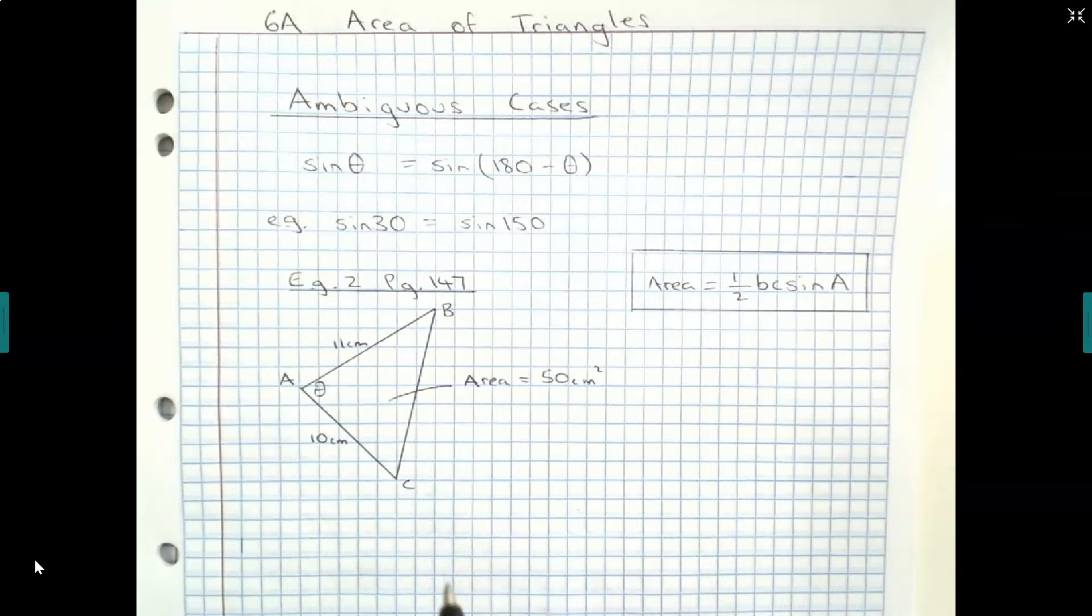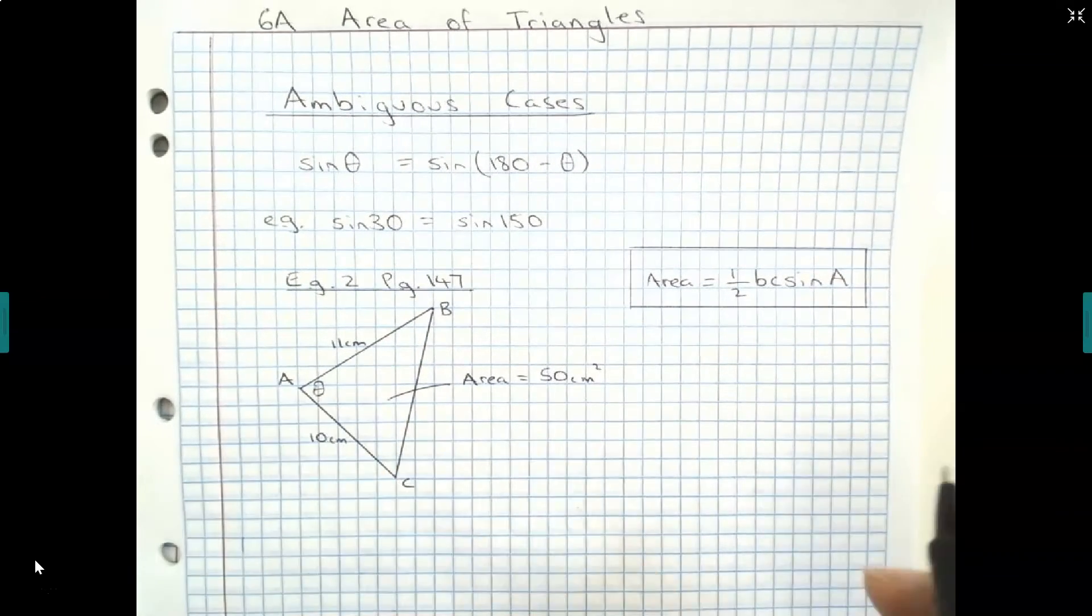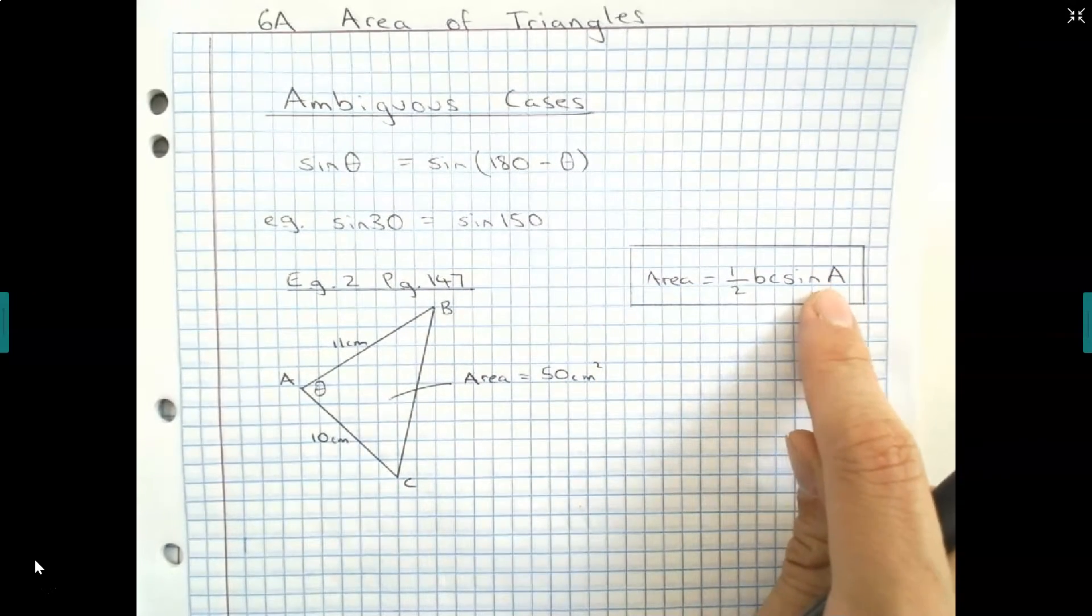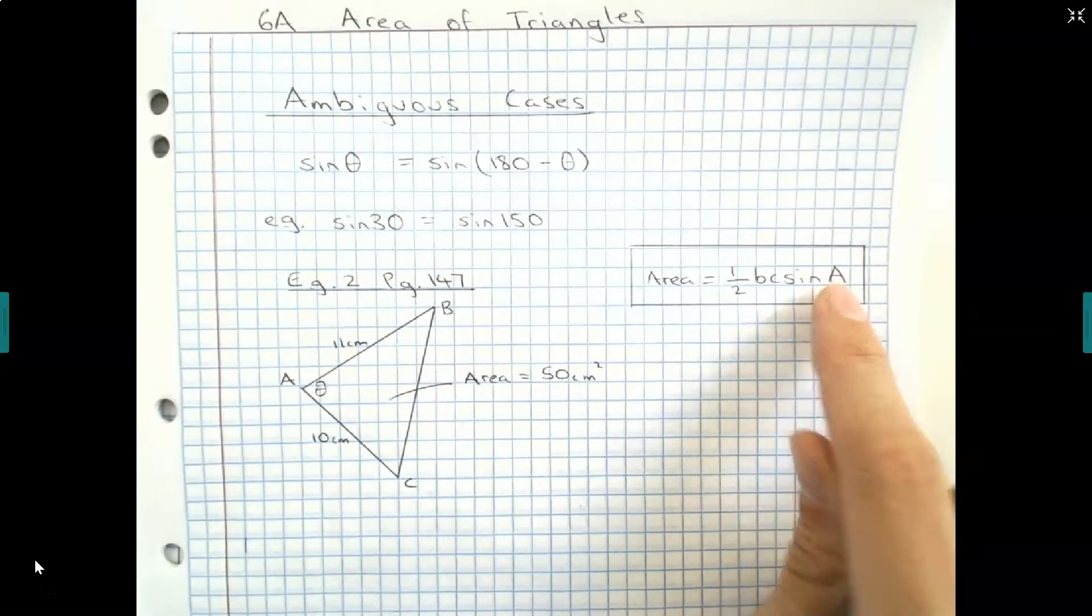If I was to try and find unknown angle theta and apply it using this, I would want to rearrange so A is by itself.